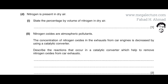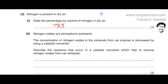The next part asks for the percentage by volume of nitrogen in dry air. Nitrogen makes up 78% of air. Oxygen is 21%, and the remaining 1% consists of other gases including noble gases like argon. Carbon dioxide and other gases are present only in trace amounts. Remember this composition of air.